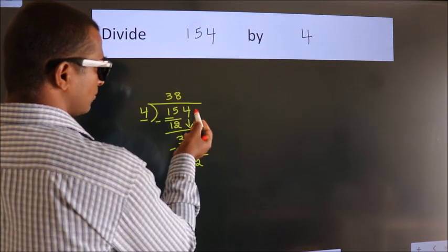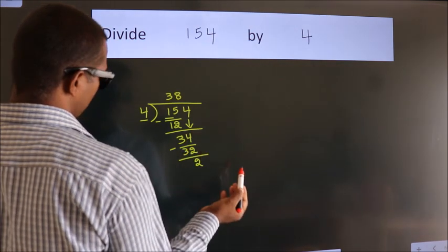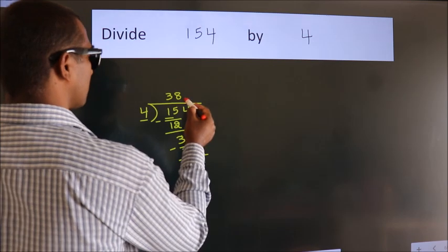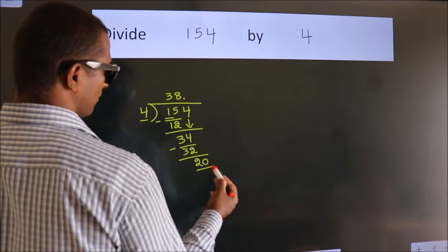After this, no more numbers to bring down. So what we do is put a dot and take 0, making 20.